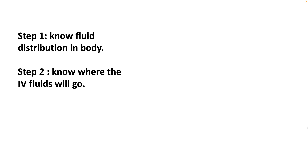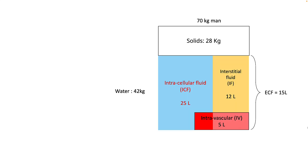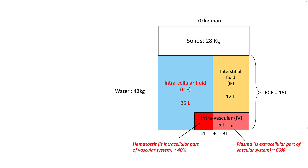There are only two steps to figure these things out. First, know the fluid distribution in the body and know where the IV fluid you are giving will go. A 70 kg person has approximately 28 kg of solid and 42 kg of water. The water is distributed between ICF and ECF. ICF is around 25 liters and ECF is around 15 liters. The intravascular volume is around 5 liters, and it has two components: the intracellular part, which is your hematocrit — your RBCs and WBCs — and the plasma, which is the extracellular part.